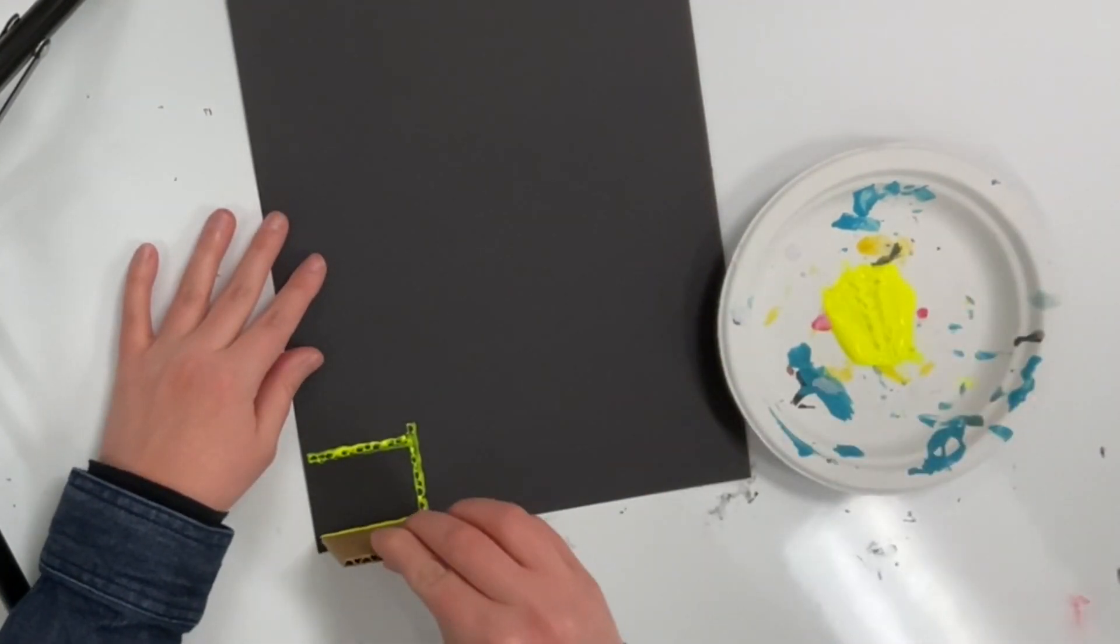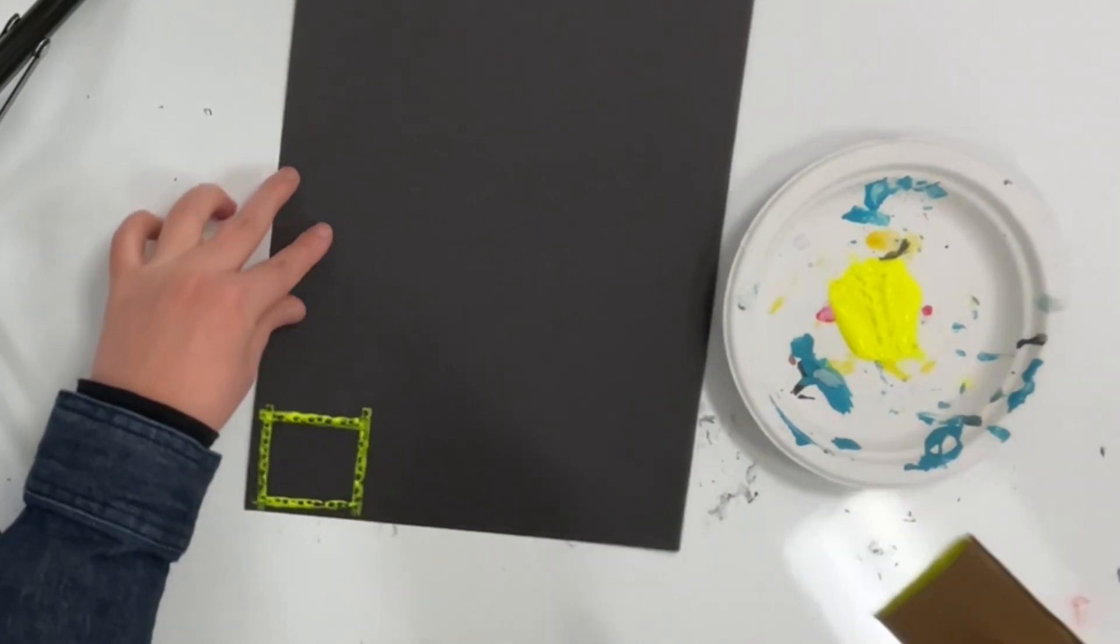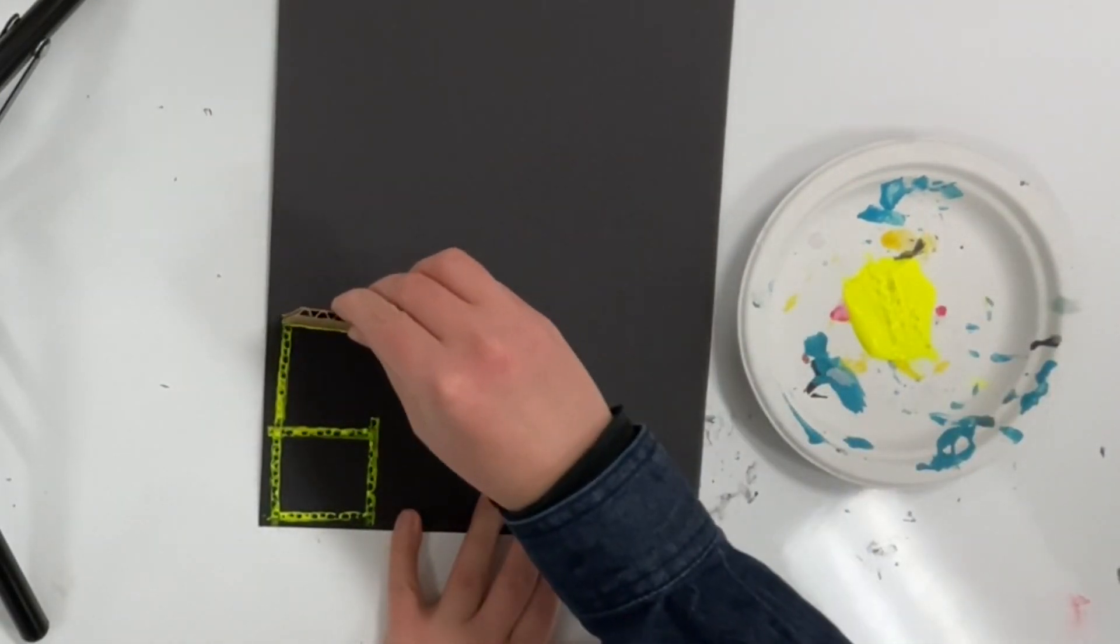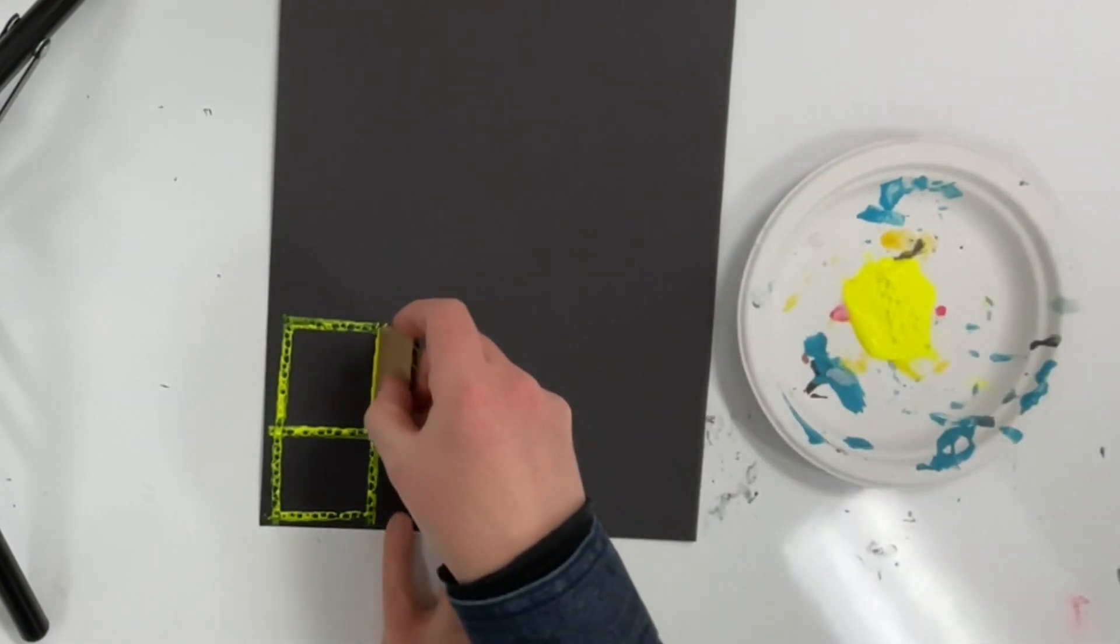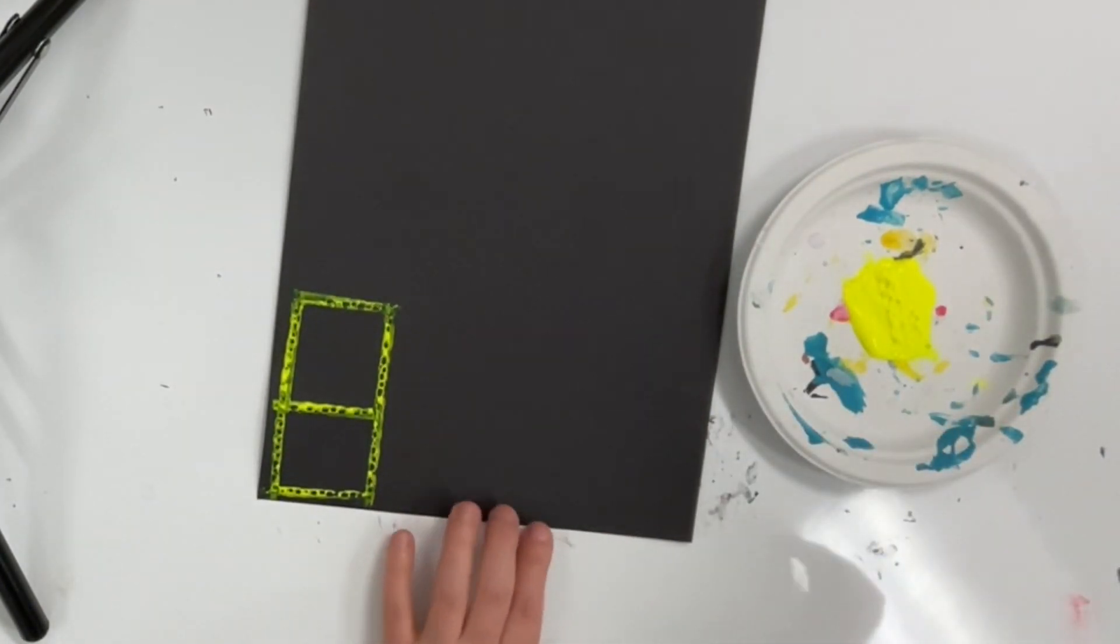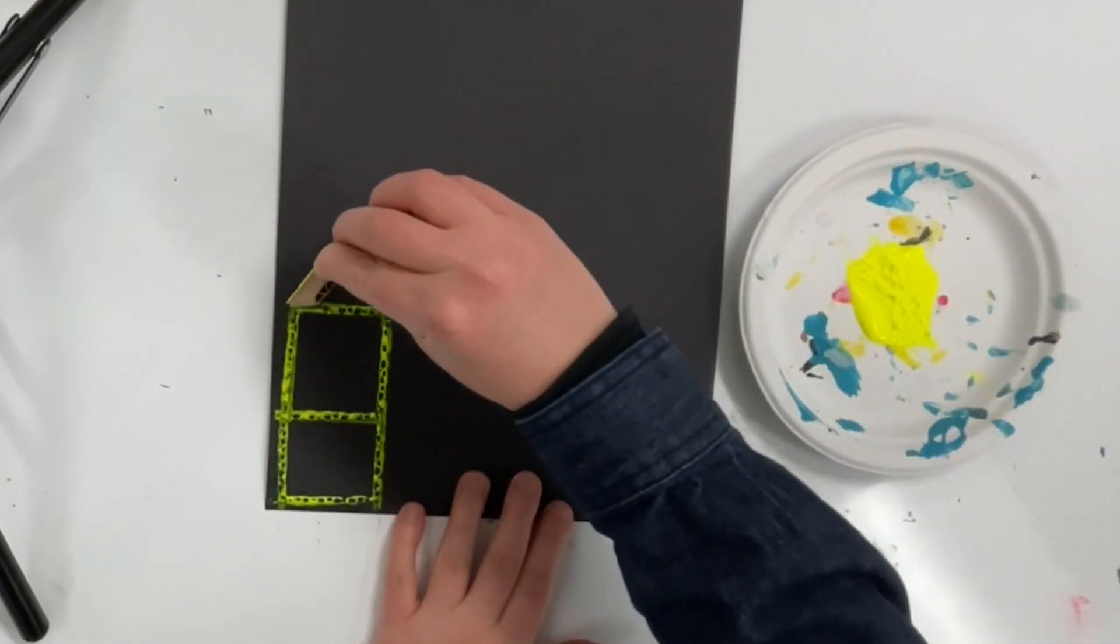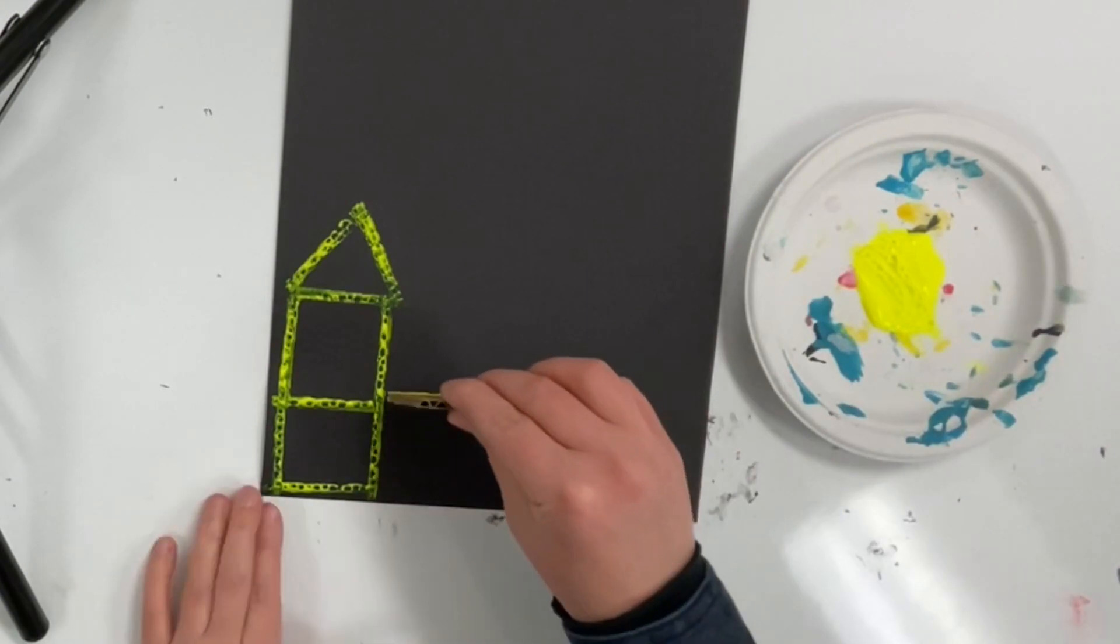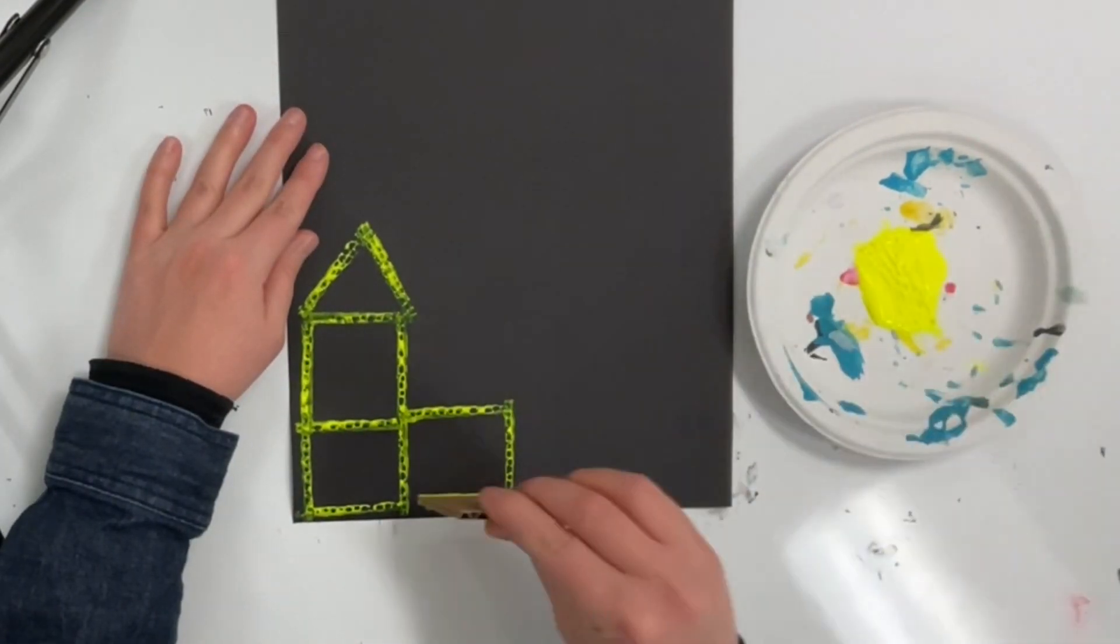I have a piece of cardboard and one color of paint, and I'm going to make shapes by printing lines. I'm printing because I'm dipping my cardboard into the paint then pressing and lifting it off the paper. If I were to drag my cardboard around on the paper that would be painting. Remember I'm printing, not painting right now.